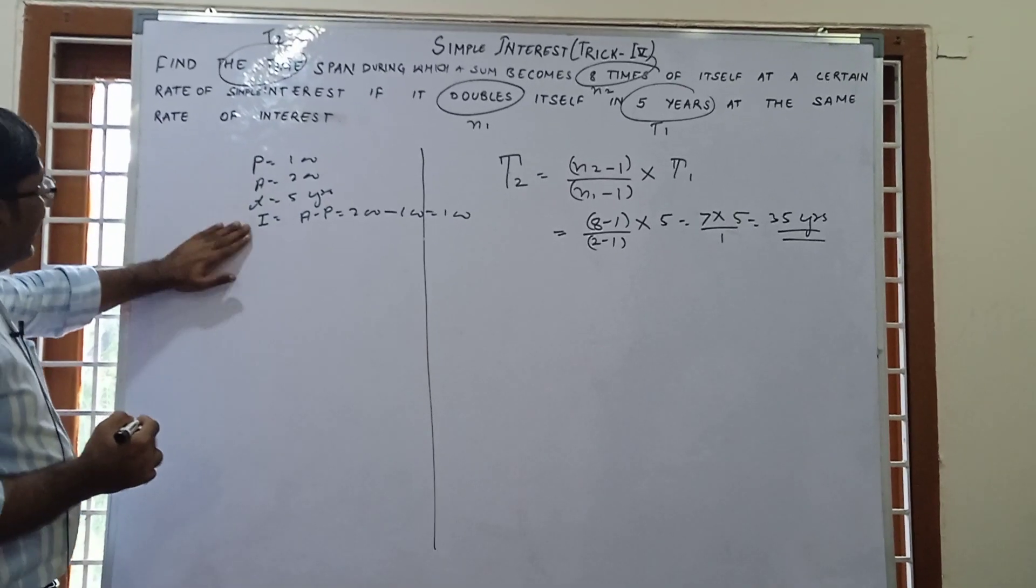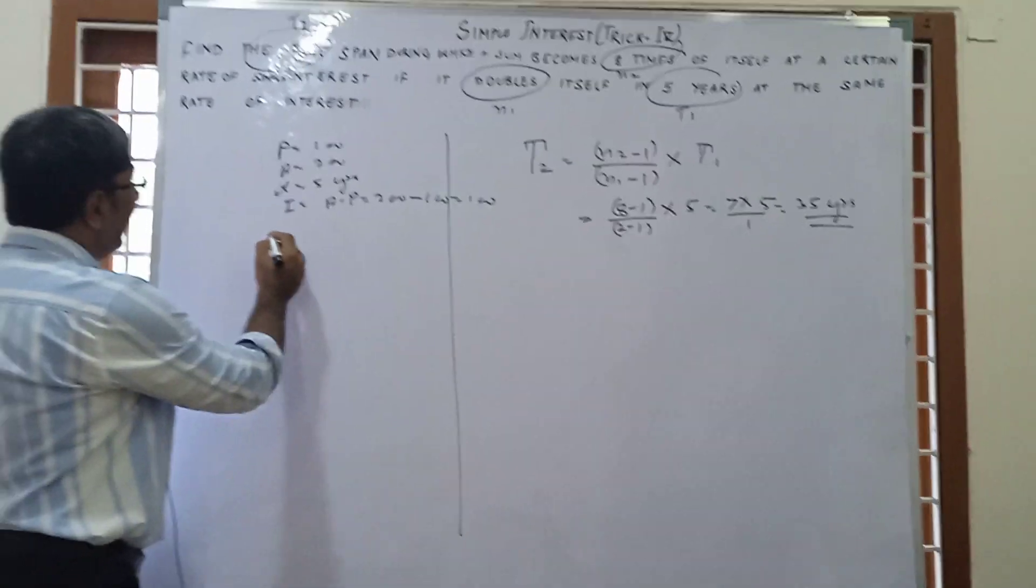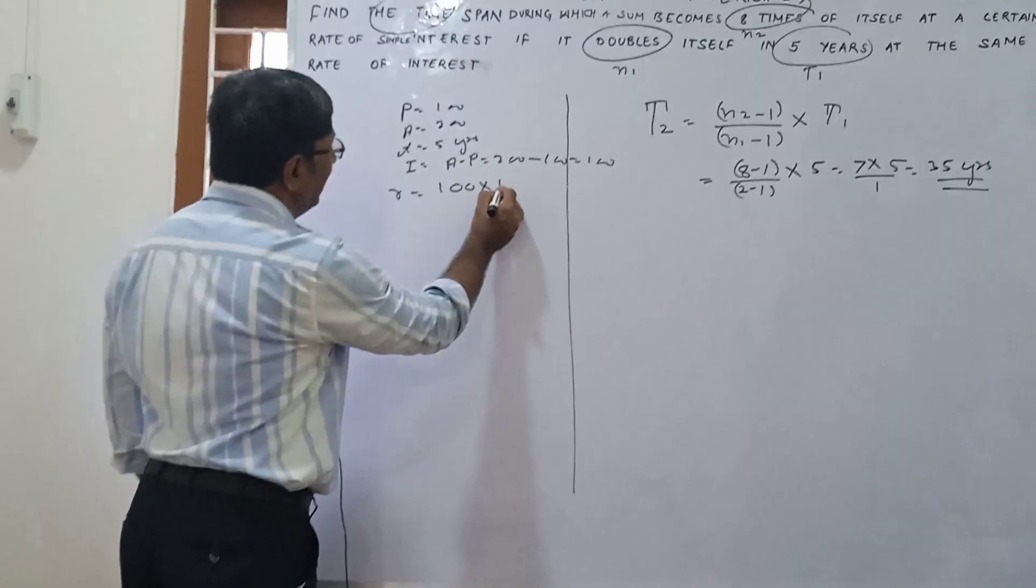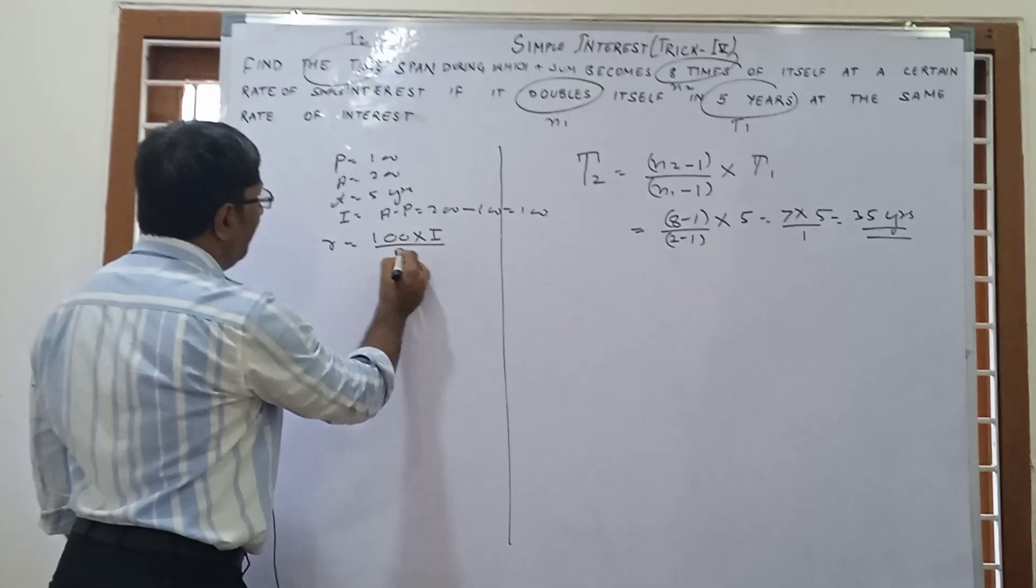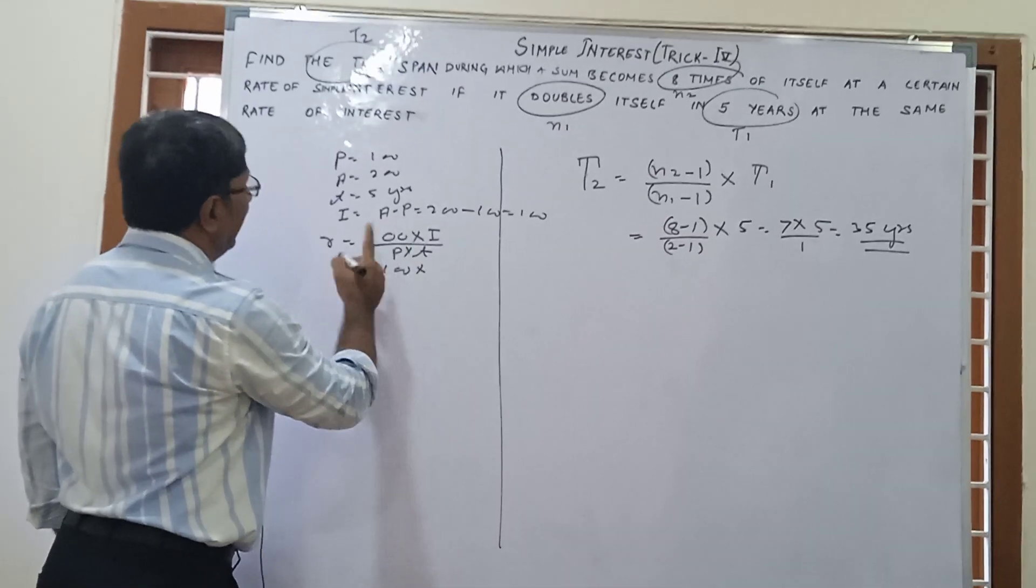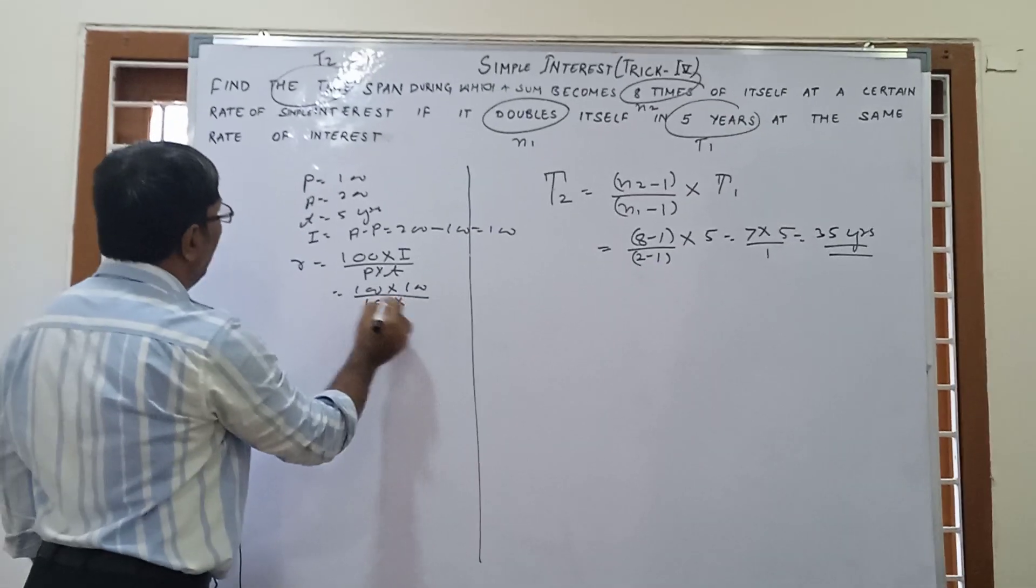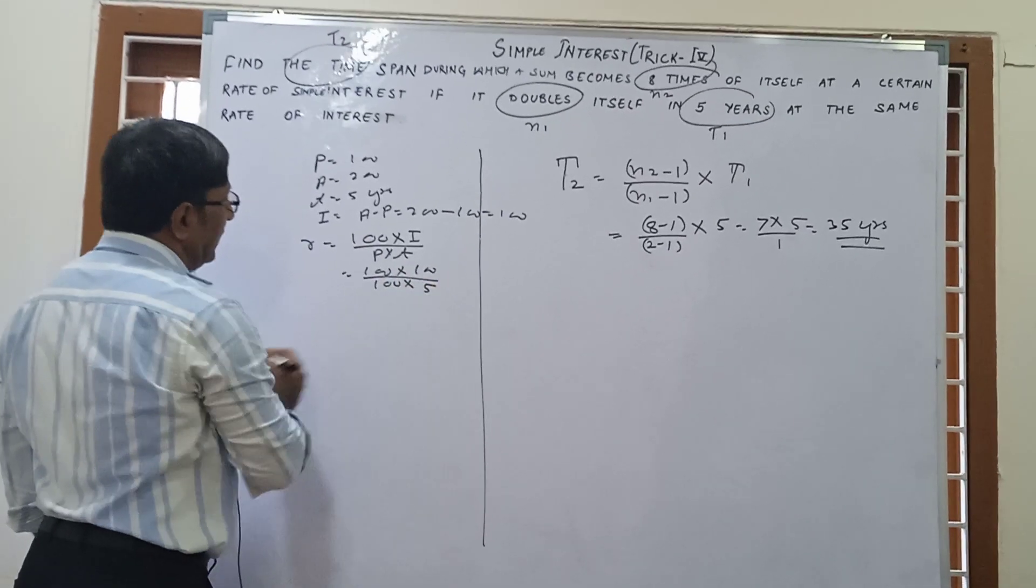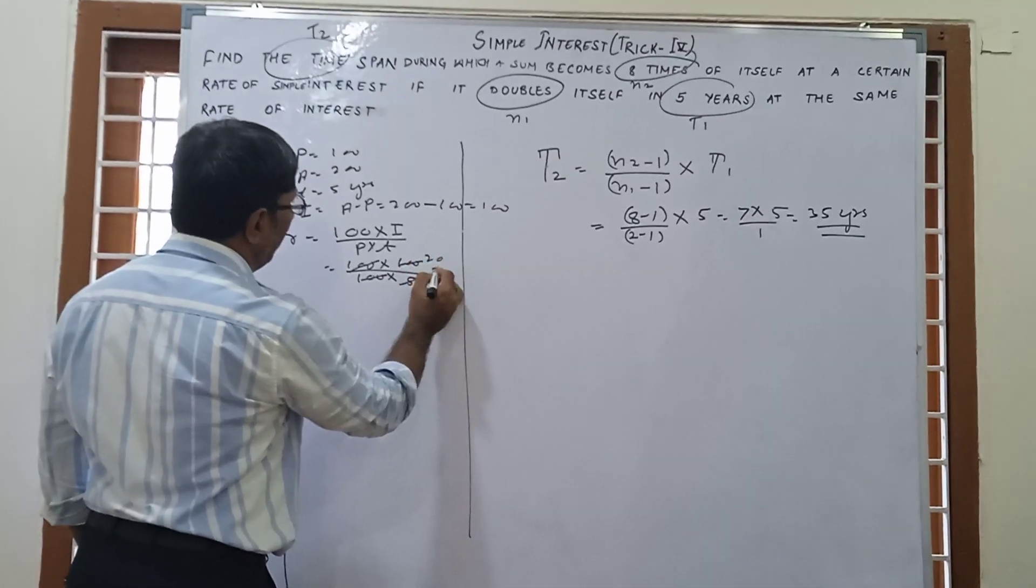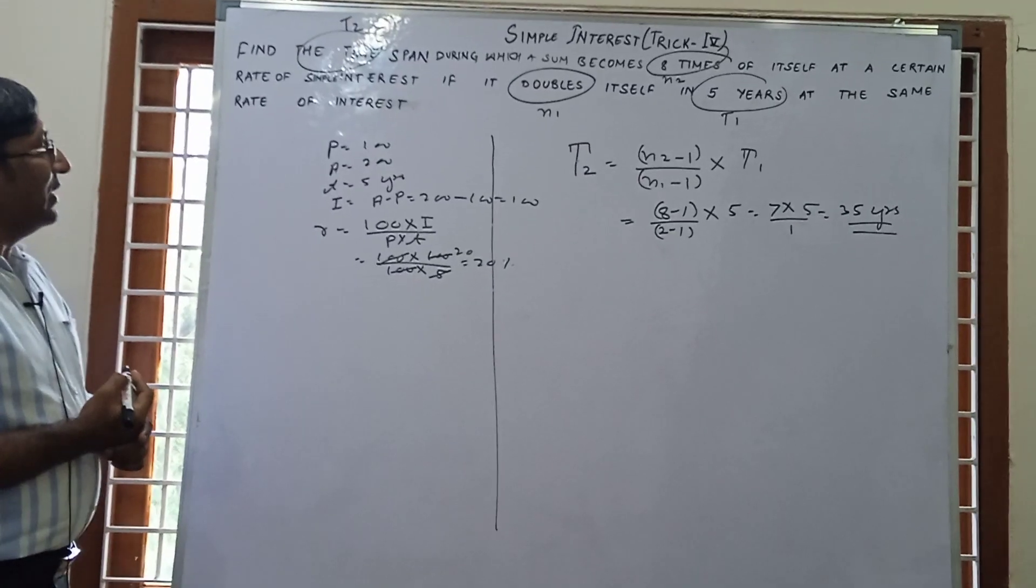Now we have interest, time, and principal, so we can find rate. Rate of simple interest is 100 times simple interest upon P times T. So this is 100 times 100, P is 100, T is 5. The 100s cancel out, and this is 5 into 20, that is 20% is the rate of simple interest.